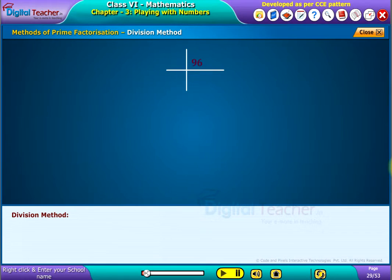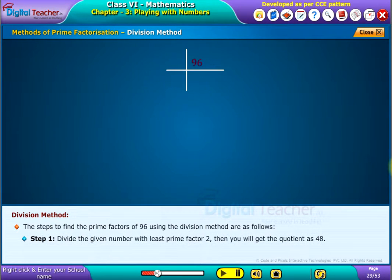Division method: The steps to find the prime factors of 96 using the division method are as follows. Step 1: Divide the given number with the least prime factor 2, then you will get the quotient as 48. Step 2: Check again by which prime number 48 is divisible.